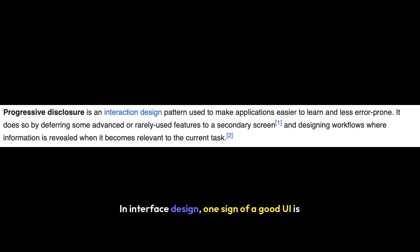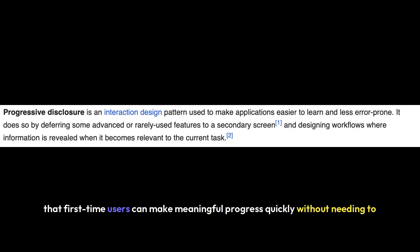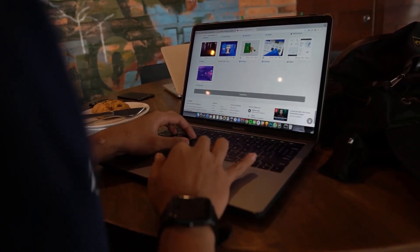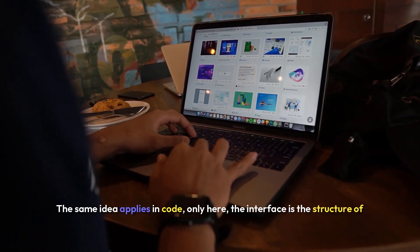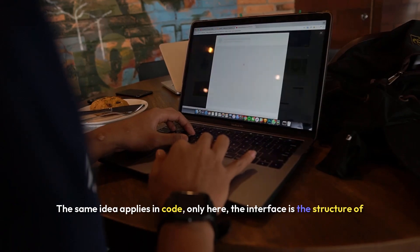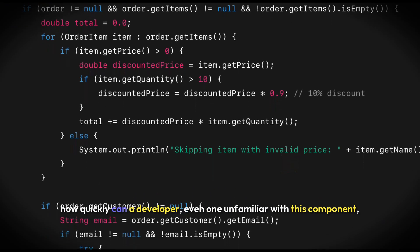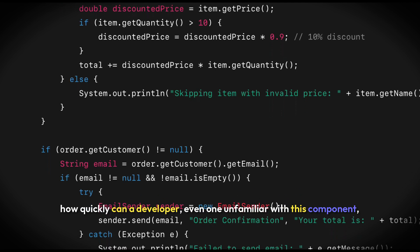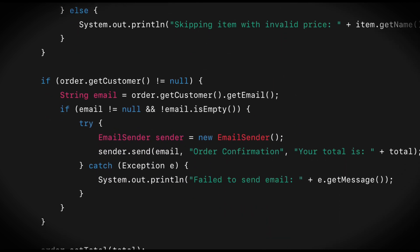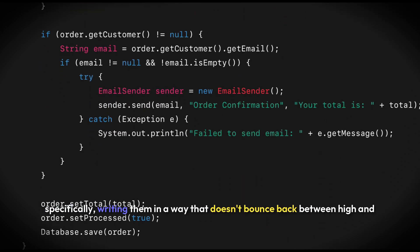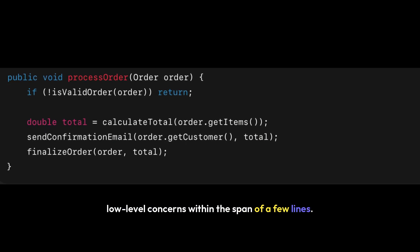In interface design, one sign of a good UI is that first-time users can make meaningful progress quickly without needing to read the manual, and then gradually learn the deeper functionality as they become more comfortable. The same idea applies in code. Only here, the interface is the structure of the code base itself. And usability in this context means how quickly can a developer, even one unfamiliar with this component, become effective in the code. And that comes down to how you write your functions.